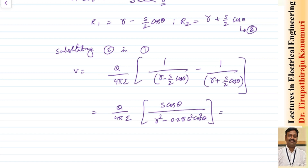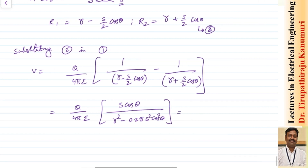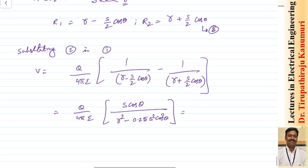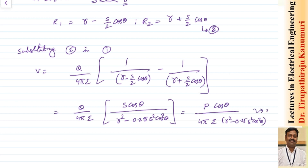Since Q multiplied by S has already been defined as the term P, I can write the magnitude of P into cos theta divided by 4 pi epsilon into (R squared minus 0.25 S squared cos squared theta). Let us take it as equation number 3.